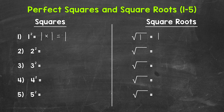Let's move on to number 2, where we have 2 squared. 2 squared means 2 times 2. 2 times 2 equals 4, so 2 squared equals 4. That means that the square root of 4 equals 2.